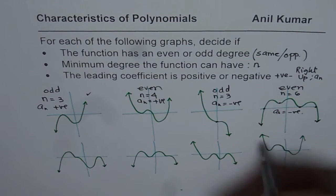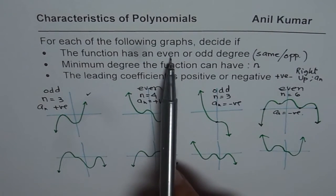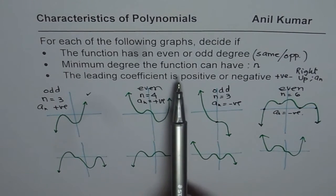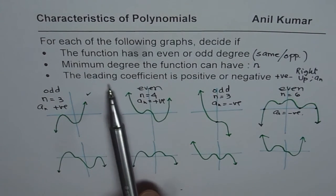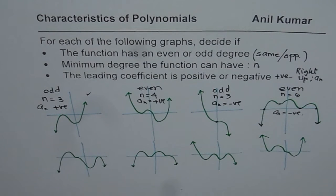So, you need to give the information about these polynomials, whether these functions have even or odd degree, just as we decided, and then minimum degree, count the zeros, and the leading coefficient, check the right side, whether it is up or down. I hope that helps. Thank you, and all the best.